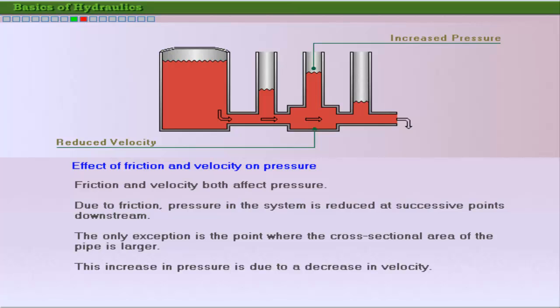Let's see how friction and velocity affect pressure. Due to reduced friction, pressure in the system is reduced at successive points downstream. The only exception is at points where the cross-sectional area increases. Here, the increase in pressure is due to a decrease in velocity.